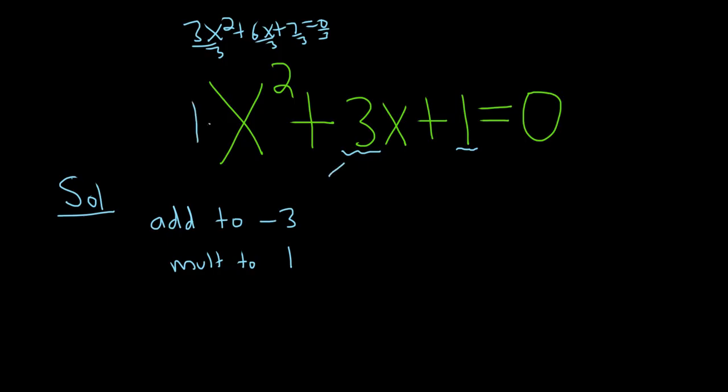Alright, so add to the opposite of this and multiply to this, always. Now the answers are always going to be of the form, so here's what you do. You take this and you divide it by 2, and then you put a plus u. That's one of the answers.